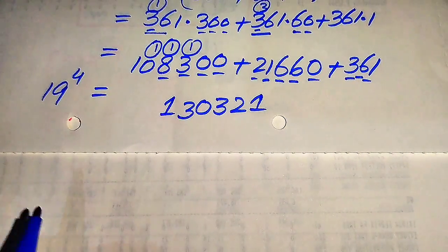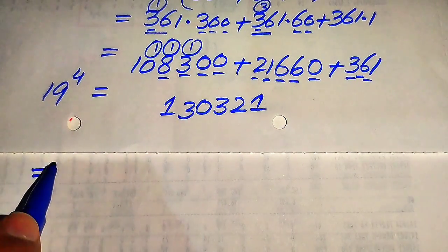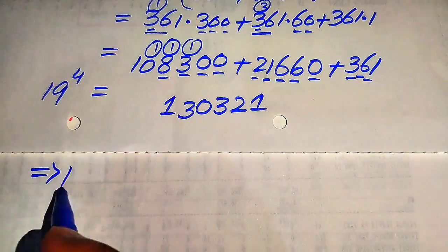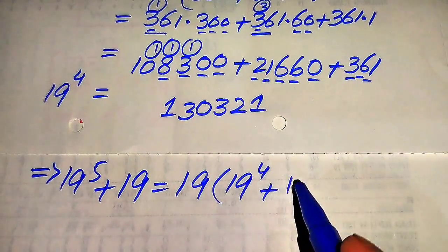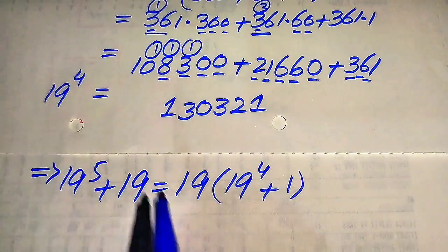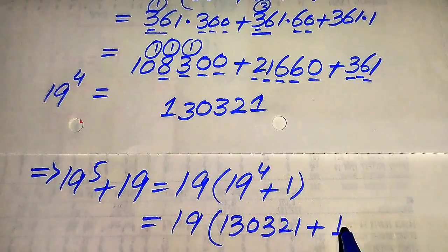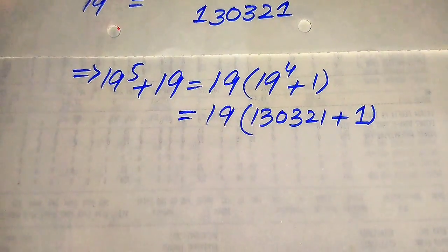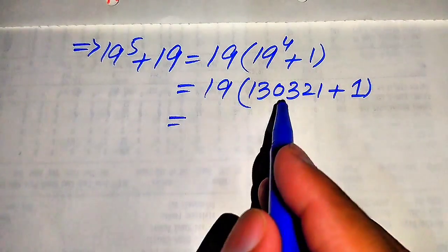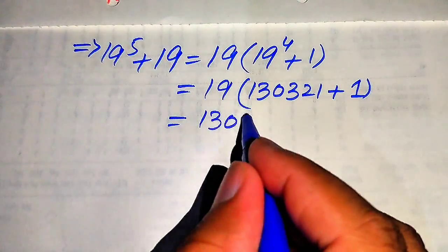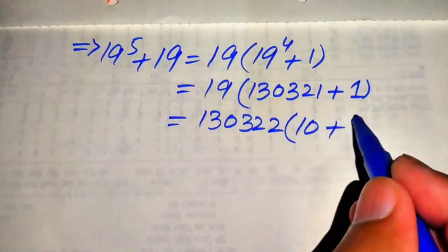Now we move backward and substitute the value of 19 to the power of 4 into the above expression. So 19 to the power of 5 plus 19 equals 19 times of 19 to the power of 4 plus 1. After substituting, this becomes 19 times of 130,321 plus 1, which equals 19 times 130,322.